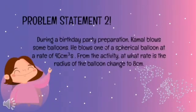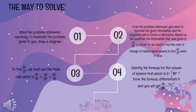The second problem statement: during a birthday party preparation, Kamal blows some balloons. He blows one spherical balloon at a rate of 55 cm³ per second. From this activity, at what rate is the radius of the balloon changing when the radius is 8 cm? The first step is to read the problem carefully and draw a diagram. The second step is to express the given information: dV/dt equals 55 cm³ per second, and find dr/dt when r equals 8 cm.